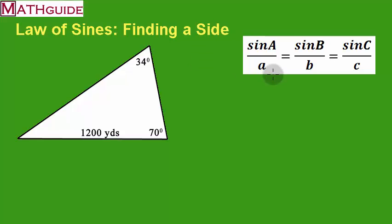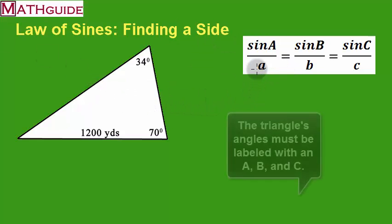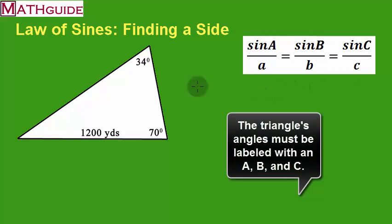You'll notice that the law of sines does have letters A, B, and C. And you'll notice for this problem, we don't have any A, B, and C. So what I'm going to do is label the triangle, and you can label it arbitrarily. I'm going to call this angle A, I'm going to call this angle B, and this is going to be angle C.